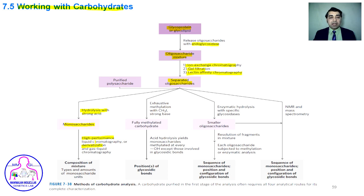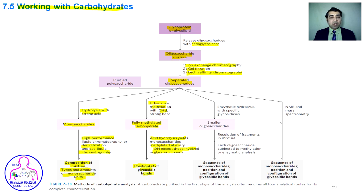If monosaccharides are not derivatized, they are analyzed by HPLC and mass spectrometry; if derivatized, they are analyzed by gas chromatography. This analysis determines the composition and amounts of each monosaccharide. In a second approach, exhaustive methylation using methyl iodide methylates all hydroxyl groups, followed by acid hydrolysis, which breaks all glycosidic bonds. This reveals the position of glycosidic bonds and the sequence of monosaccharides in oligosaccharides and polysaccharides.